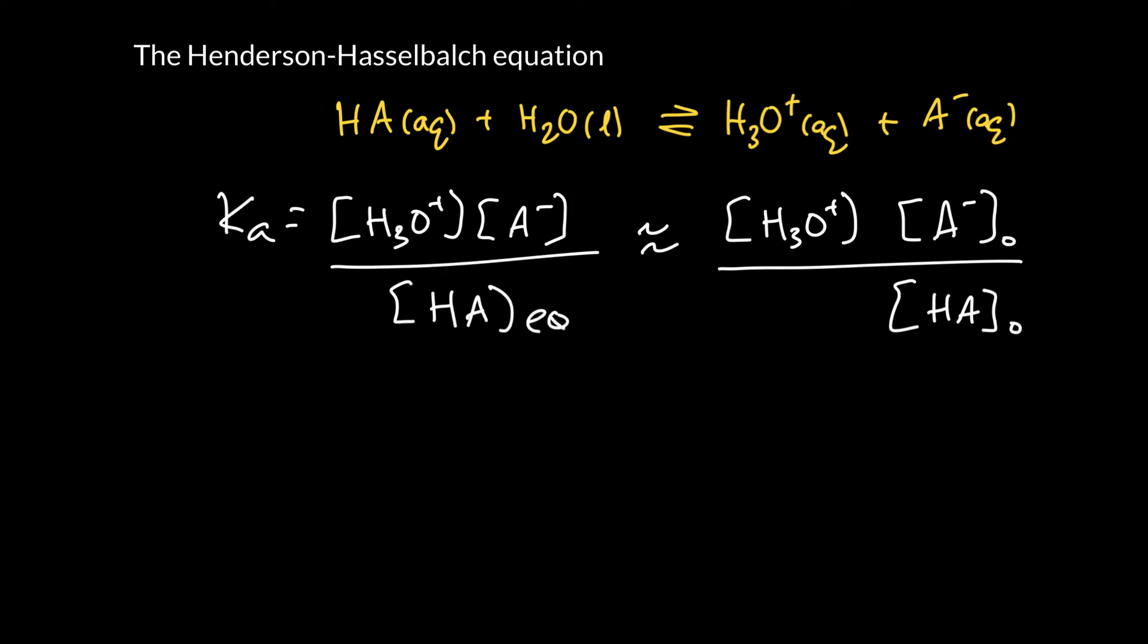We saw in our last ice chart problem that these concentrations barely change. When you start with both this and this, these values barely change at all. The hydronium concentration is the thing that really changes like crazy. So we're going to use the original concentrations instead of the equilibrium concentrations. So how is that going to help us?